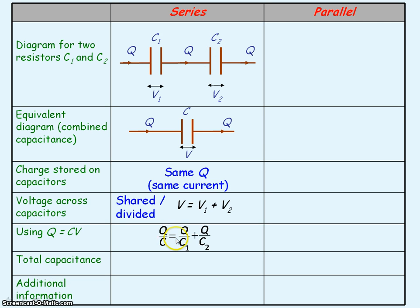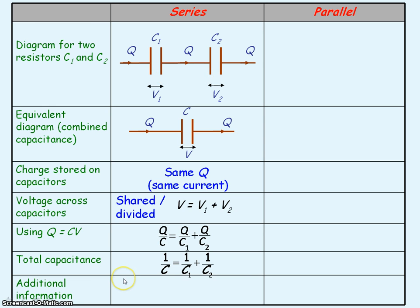The Q's cancel out as they're common throughout, so that leaves us with 1 over C, where C is our total capacitance, equal to 1 over C1 plus 1 over C2. What this means is that by connecting capacitors in series, the overall capacitance decreases, meaning the capacitors will store less charge.